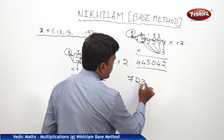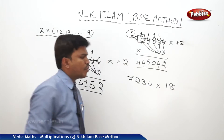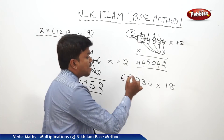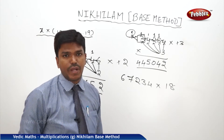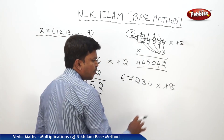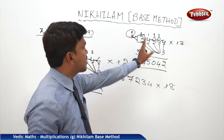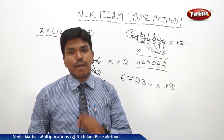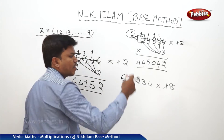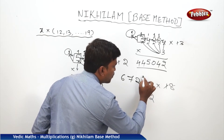One more example: 67234 into 18. Ignore 1. Start: 8 times 4 is 32 — drop 2, carry 3. Next: 8 times 3 is 24, plus carry 3 is 27. Add right side digit 4: 27 plus 4 is 31.